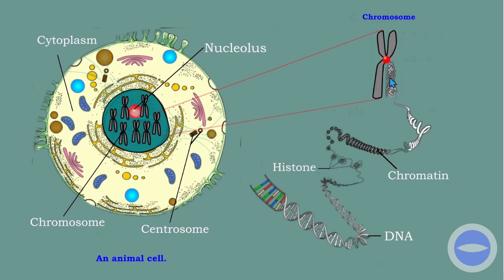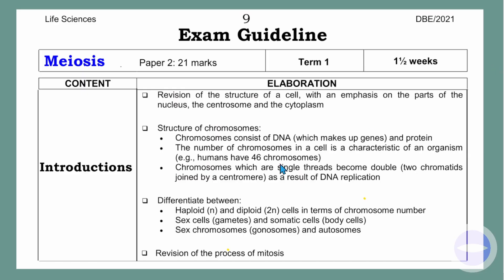This is a condensed chromosome. In the structure, we start with the DNA, then the DNA wraps on a histone protein. When DNA wraps on a histone protein, we call it chromatin or the chromatin network. When the chromatin becomes more condensed, that is when it becomes a chromosome.